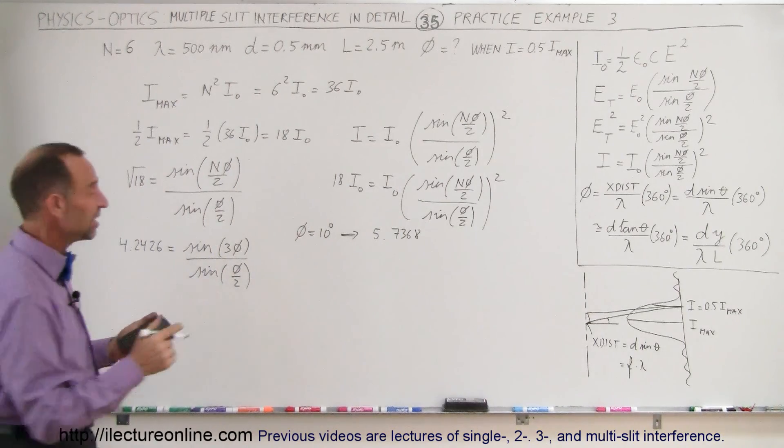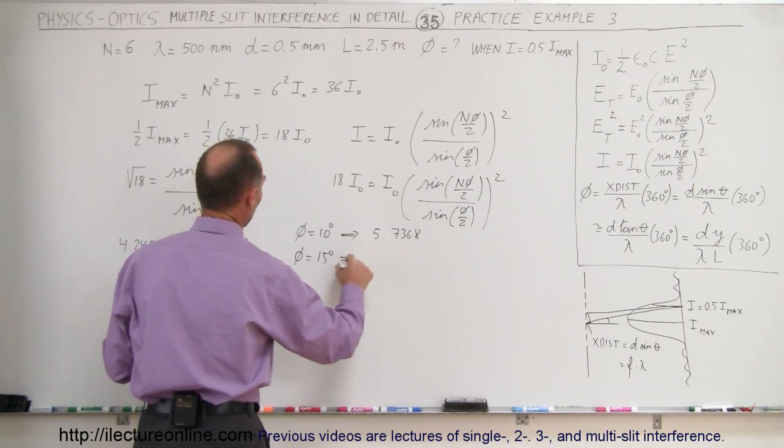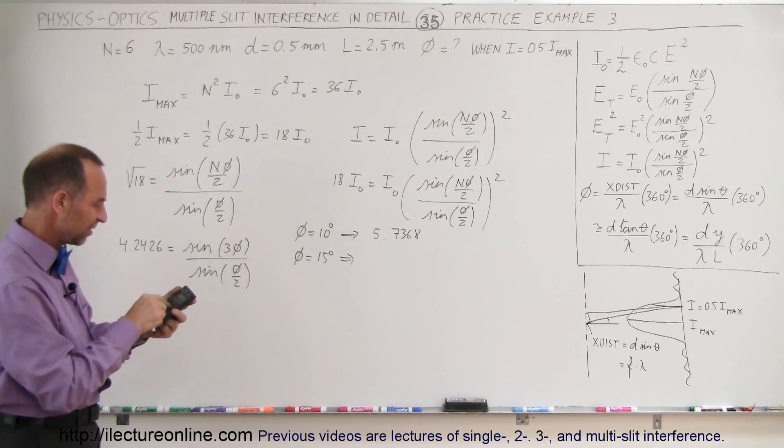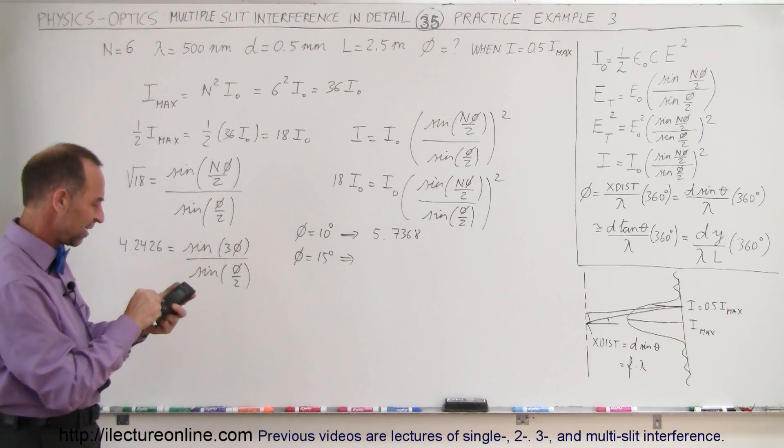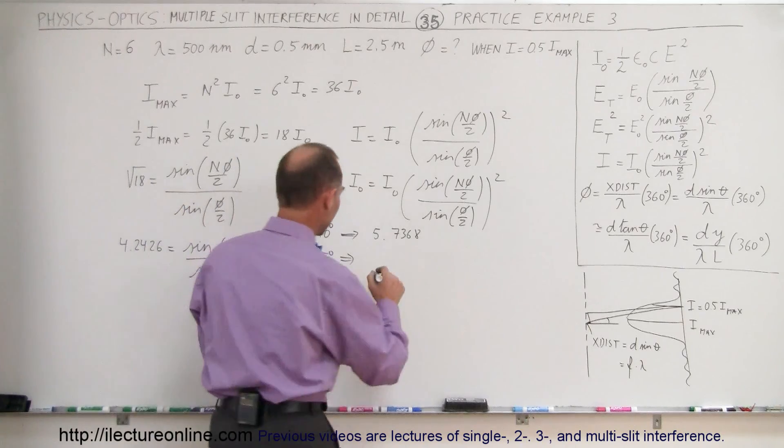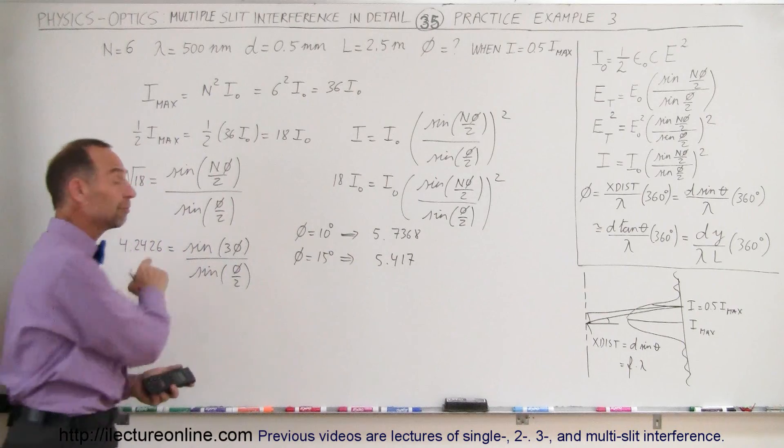Let's try 15 degrees. So when phi equals 15 degrees, we get 45, take the sine of that divided by 7.5, take the sine of that, and I get 5.417, which is still not what I'm looking for.